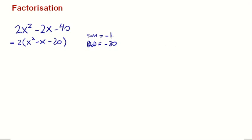This is not that difficult. Look — the product is negative, so it's going to be a positive number times a negative number. Now 20 is simply 4 times 5. Since it's negative, one of them will be negative, and since the sum is negative, the larger one is the negative one. So: 4 times negative 5 is negative 20, and 4 minus 5 is negative 1. There you go.